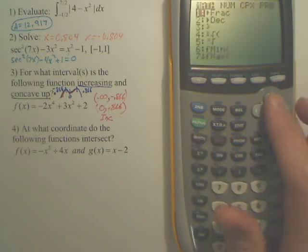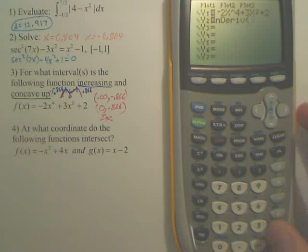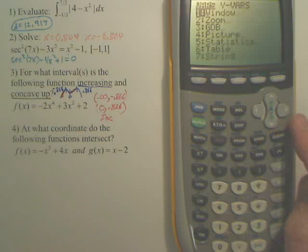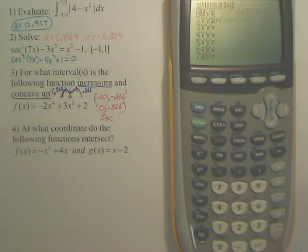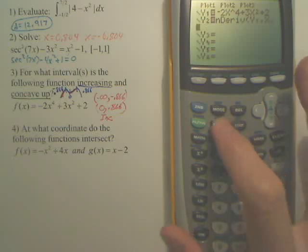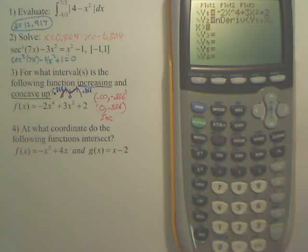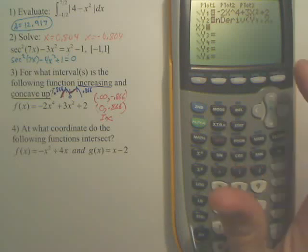So you go math and you go in derivative. And then what equation are you deriving? You're deriving y1, so you hit vars. And you go over 1, you go to functions. There's y1. Comma, we're deriving in respect to x. And you do x one more time because you're plugging x back into itself. Close your parenthesis.